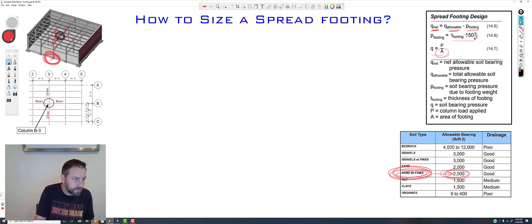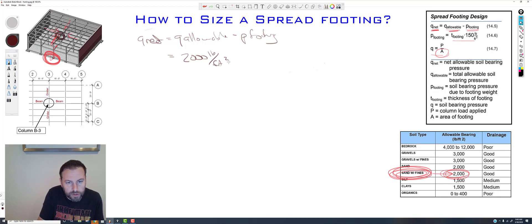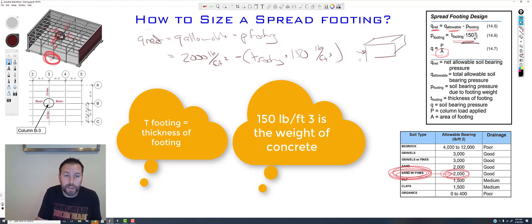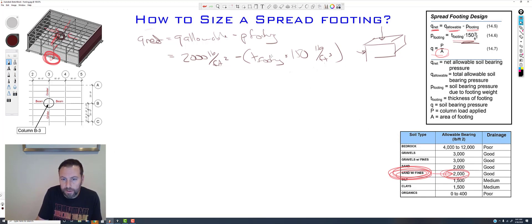So Q net, let's get to a darker one here. So Q net equals Q allowable minus the P of the footing, the pressure of the footing from above. So Q net, in this case, is 2,000, oh sorry, Q allowable is 2,000 pounds per foot squared minus the P footing. Now what I'm going to do is I'm going to just take this whole portion of the formula right here and put it in. So T footing times 150 pounds per foot cubed. The T footing, if we look at a footing design, is this measurement right here, how thick it actually is. Then the column would be up on top, pushing down there.